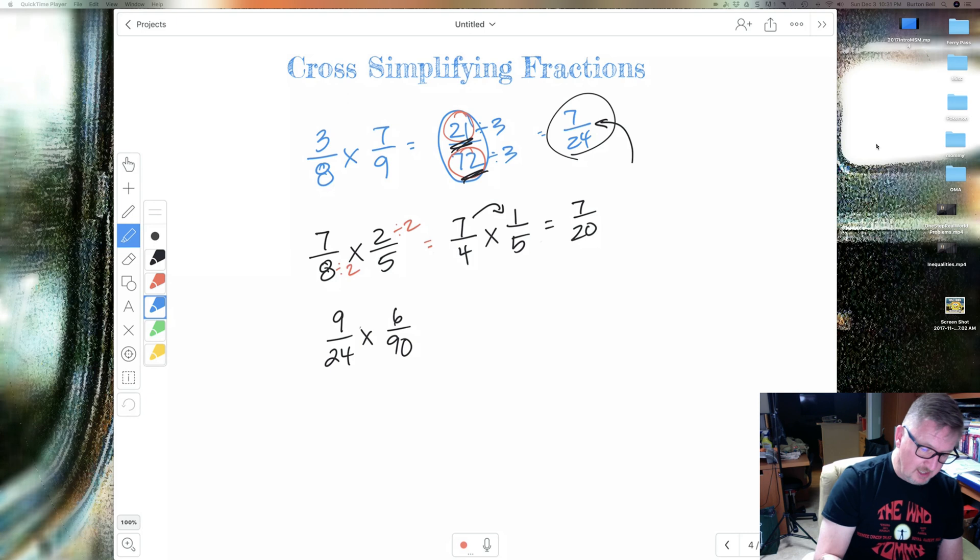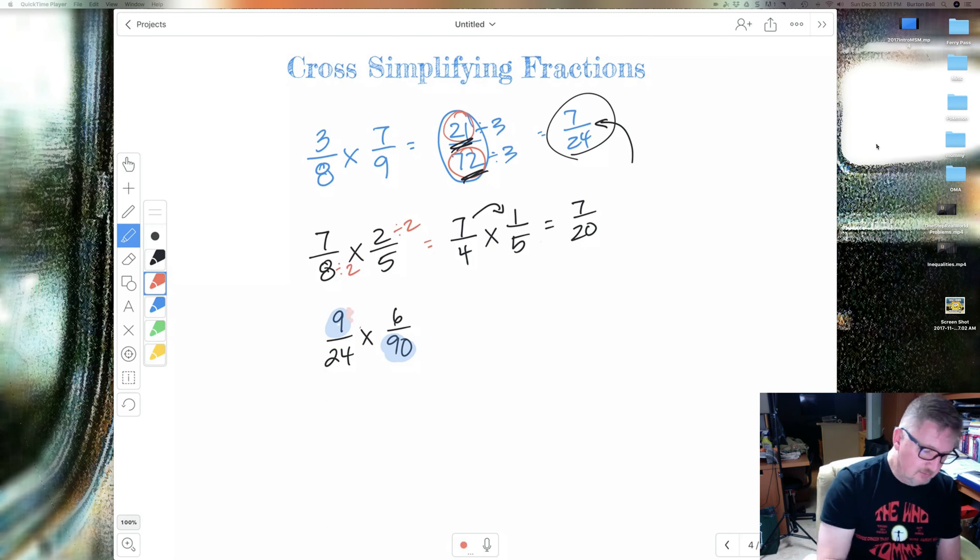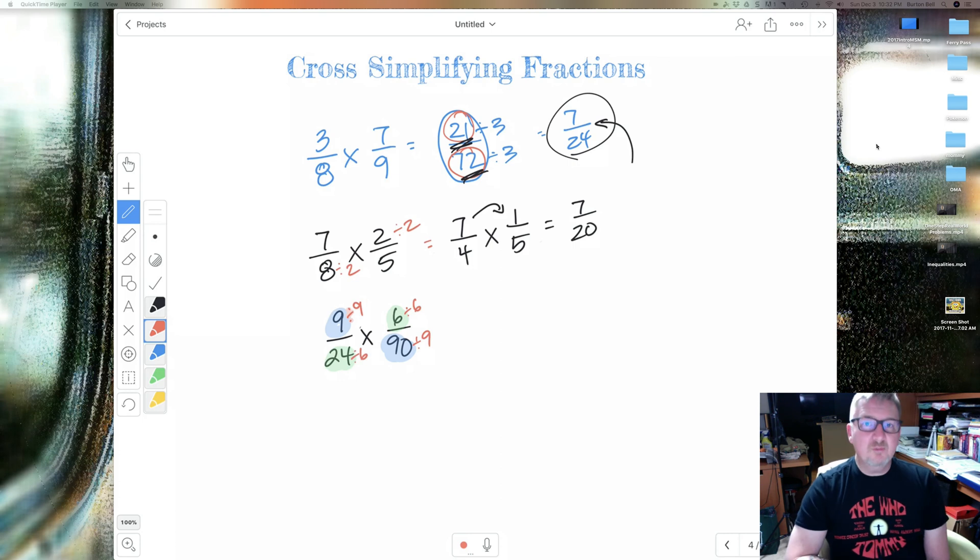So we're going to take 9 and 90, and we're going to divide it by the same number. The question is, which number goes into both of them? What's the biggest number that goes into both of them? We're using greatest common factor here. Well, they both can be divided by 9. But wait, don't stop there, because 6 and 24 both have a common factor that we can divide by. Guess what? It's 6. So you can do this more than once.